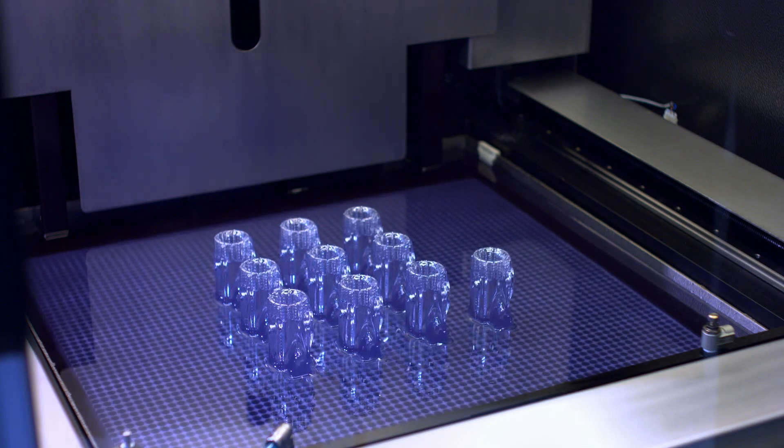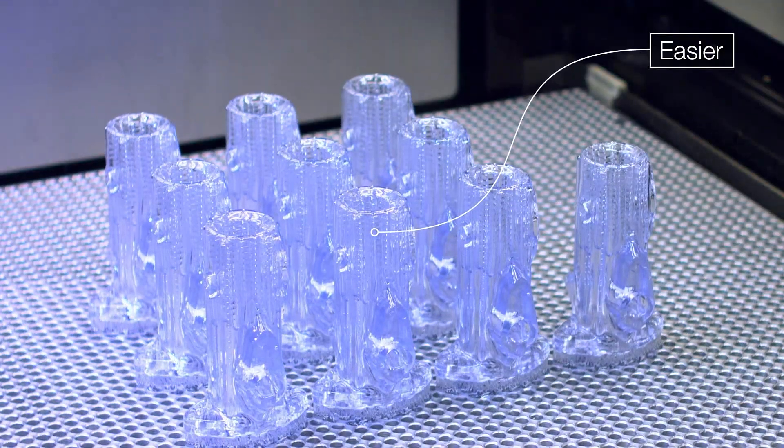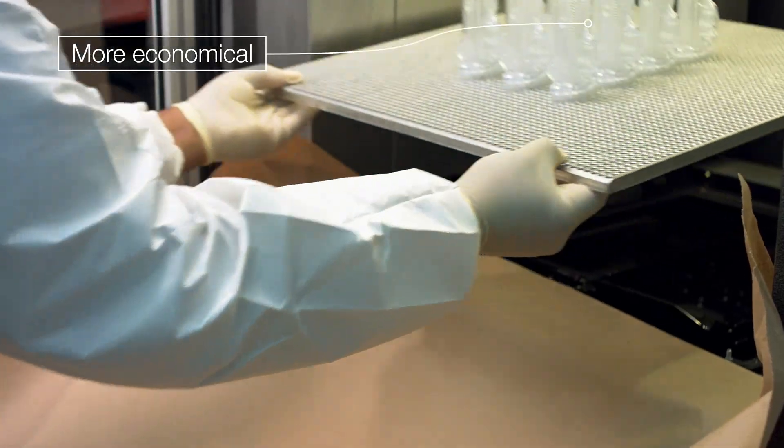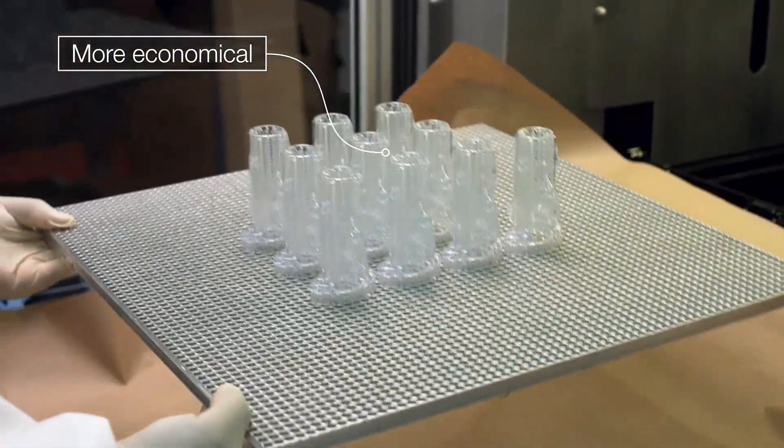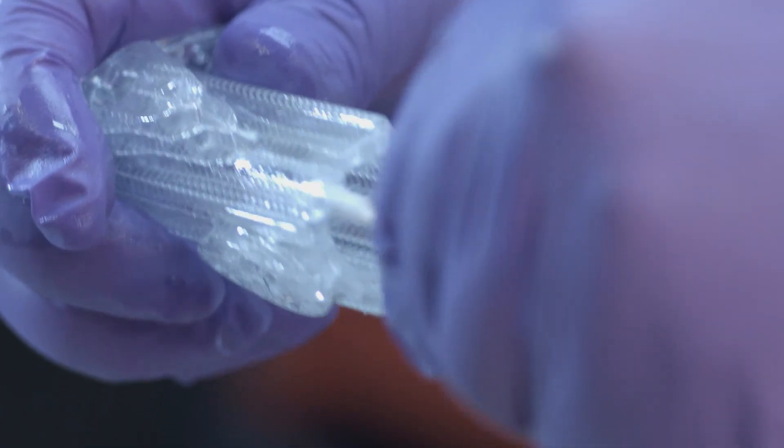By utilizing the V650 for investment casting, we make the process easier and also more economical. We actually 3D print the pattern in a very unique process where it's mostly hollow.